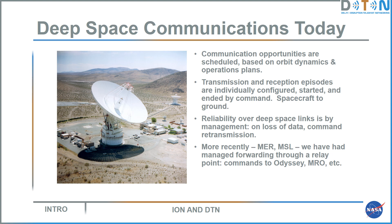Communication with spacecraft in deep space is very different from communication on Earth. Communication opportunities are not continuous — they are scheduled based on the orbital dynamics of vehicles and their operation plans. Sometimes a spacecraft is on the far side of a planet and can't be reached; sometimes its antenna is pointed toward the planet for science investigations. Transmission and reception episodes are individually configured, started and ended typically by command sent to the spacecraft and to the Deep Space Network tracking stations at Canberra, Goldstone, and Madrid.